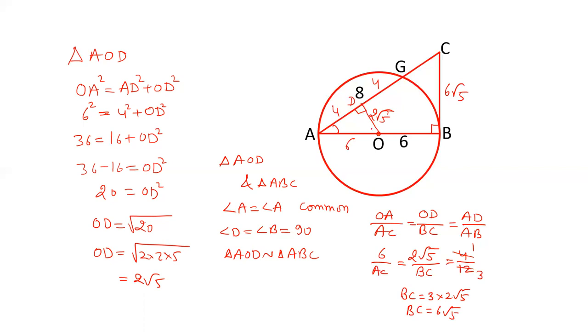These are similar but they are not parallel to each other. The corresponding sides are different. The value of BC is 6√5. Similarly, we can calculate the value of AC, which is 18. This will give us the value of GC also, because AG is 8. So GC will be 18 minus 8, that is 10. The length of GC is 10, and the length of BC is 6√5.